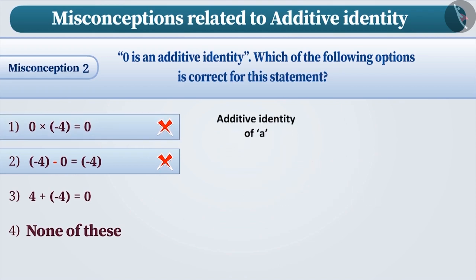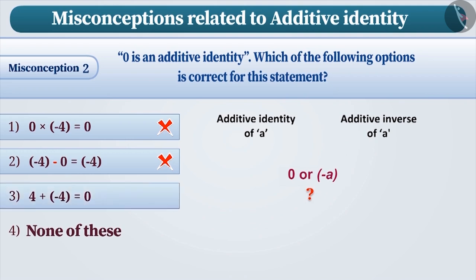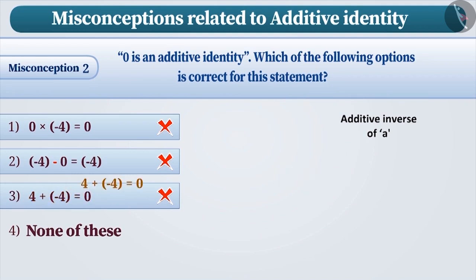Some children get confused between additive identity and additive inverse. Hence, option 3 is considered as the additive identity property. This is an incorrect answer.